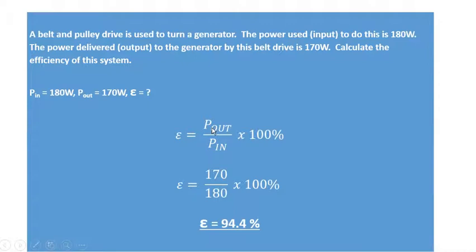Well, the efficiency is the power out divided by the power in times 100%. So 170 out divided by 180 in times 100 gives me 94.4% efficiency.